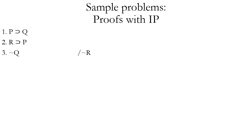Now let's look at some sample problems to illustrate how you can use this rule. In this proof, we have three premises and we're supposed to conclude not R or tilde R. So what should we assume if we want to use indirect proof? We should assume R, which is the logical opposite of tilde R. You can also assume tilde tilde R, and that would be fine, but it would require an additional double negation at the end. The justification for our assumption on line four is A parentheses IP. We indent line four to show it's an assumption — not something that follows from our initial premises.